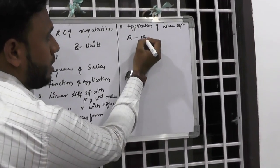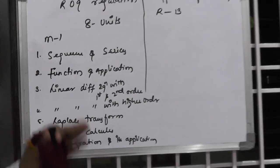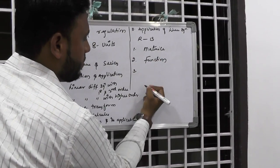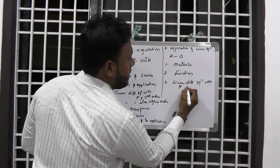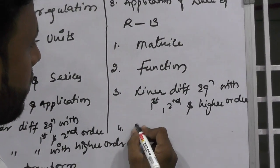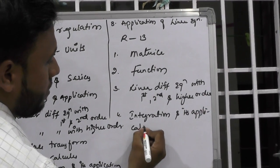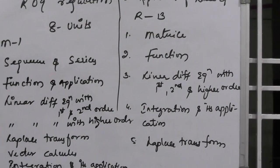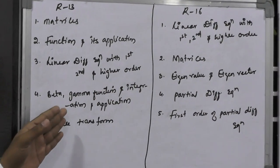Now coming to R13 regulation, these eight units are divided and reduced to five units. In engineering mathematics, it consists of five units like matrices, functions, linear differential equations with first, second, and higher order, beta and gamma functions, and integration and its application, and Laplace transform.